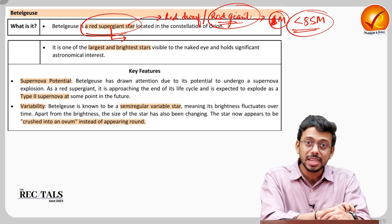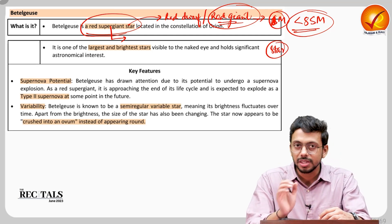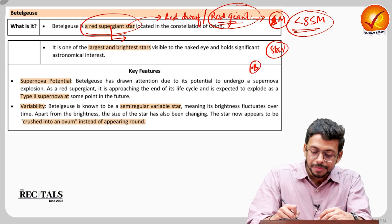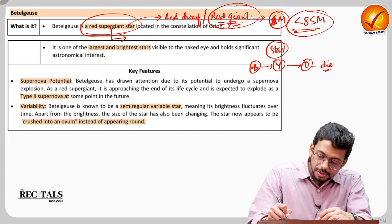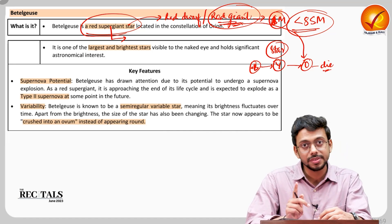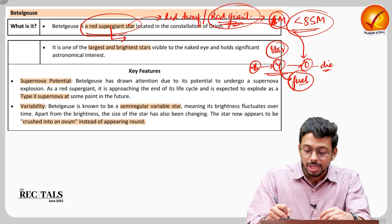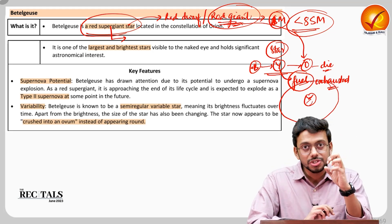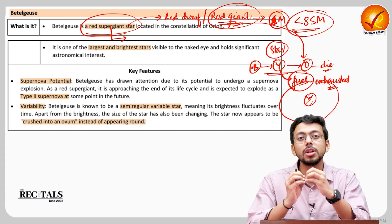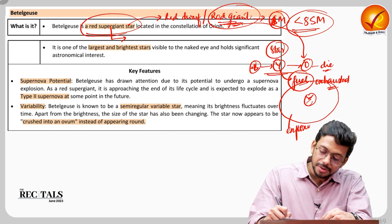Every star has phases, just like humans — there is a birth phase, a young phase, and an old age phase, and then it dies. The red giant is the old age phase our sun will also enter. When all the fuel within the star gets exhausted, the core is going to shrink. Because of this shrinking, a huge amount of mass accumulates in a very small volume, making it more and more dense, which leads to explosion.